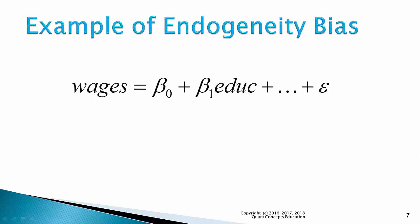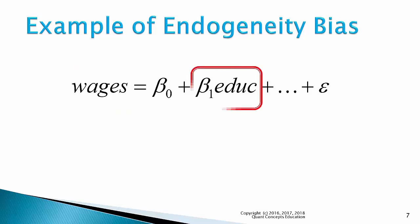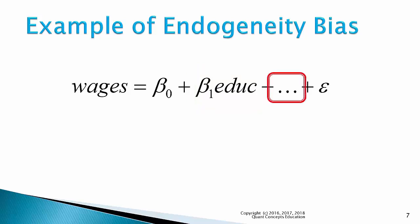Now, let's take a look at the classic wages and education regression model. The dependent variable is wages, the X variable of interest is education. We have a whole bunch of other control variables here, such as experience, IQ, gender, and so on. And we also have the error term here.